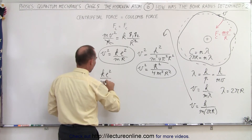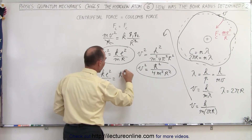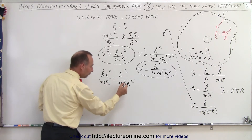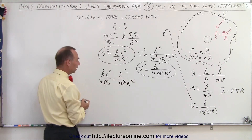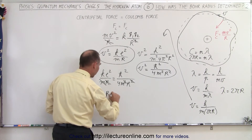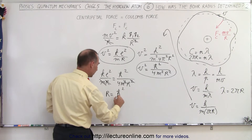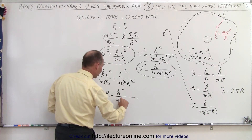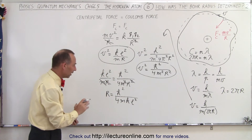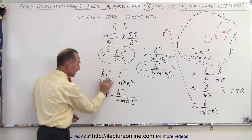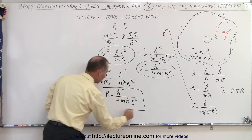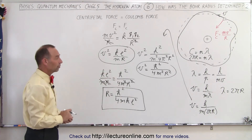Setting the two expressions equal: ke² divided by mr equals h-bar² divided by 4m²r². We can now eliminate variables — we have m and m², and r and r². Solving for r, we bring r to one side: r equals h-bar² divided by 4m times ke². So we now have an expression for the radius of the orbit based on these principles.